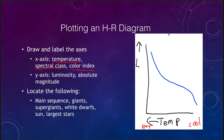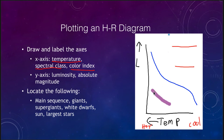The giant and supergiant stars are located out to the upper right on the diagram. The white dwarf stars are very hot but have low luminosity, so they fall below the main sequence in the lower left. Our sun is right about in the middle of the main sequence.